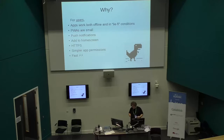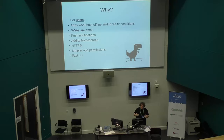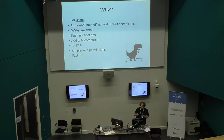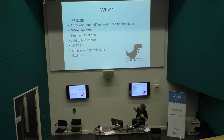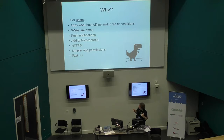Another thing I really like is the simpler app permissions model. A lot of Android apps still ask for all their permissions up front. On the web, you have an opportunity to ask for them in the right context — for example, if a map asks for your location, it's pretty obvious why. And of course they're really fast. There's a technology in service worker called streams, which means content is streamable, so everything above the fold renders really quickly. We're talking about websites that should feel faster than native apps in a lot of cases.